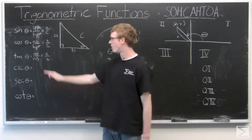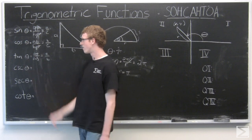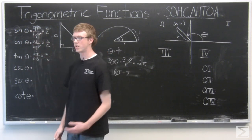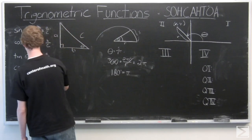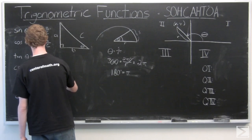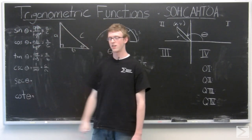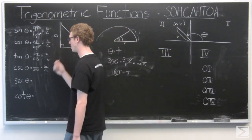So now we have the reciprocal trig functions on the bottom here. Cosecant of theta is really just 1 over sine, so it's hypotenuse over opposite. Secant of theta is 1 over cosine, which is C over B.